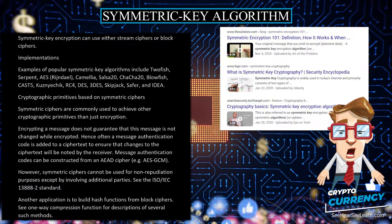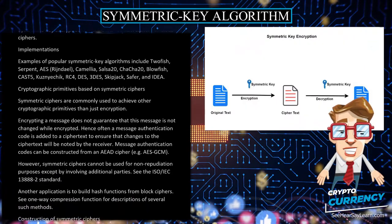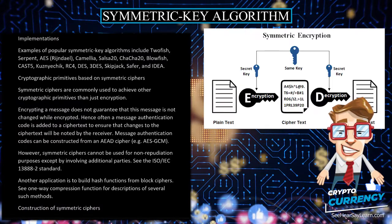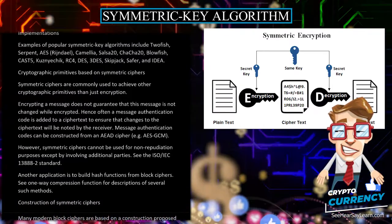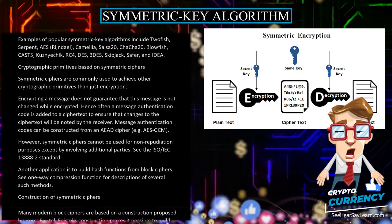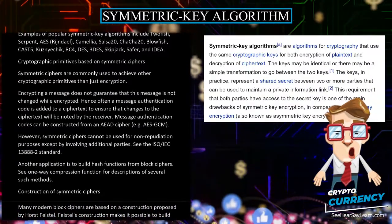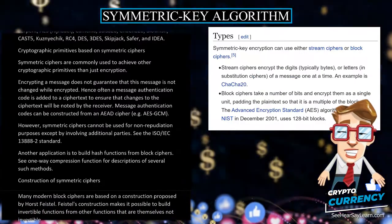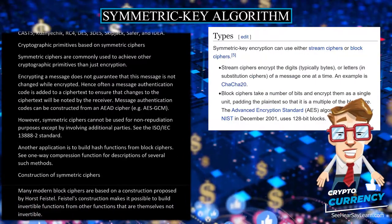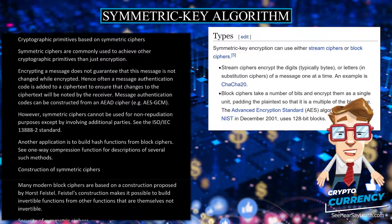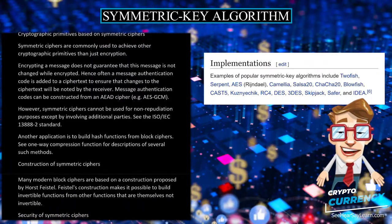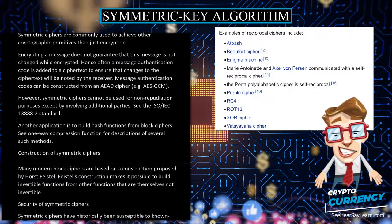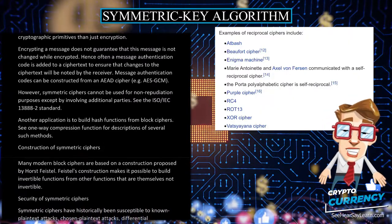Cryptographic Primitives Based on Symmetric Ciphers: Symmetric ciphers are commonly used to achieve other cryptographic primitives than just encryption. Encrypting a message does not guarantee that this message is not changed while encrypted. Hence, often a message authentication code is added to a ciphertext to ensure that changes to the ciphertext will be noted by the receiver. Message authentication codes can be constructed from an EAD cipher, for example ICE-GCM.